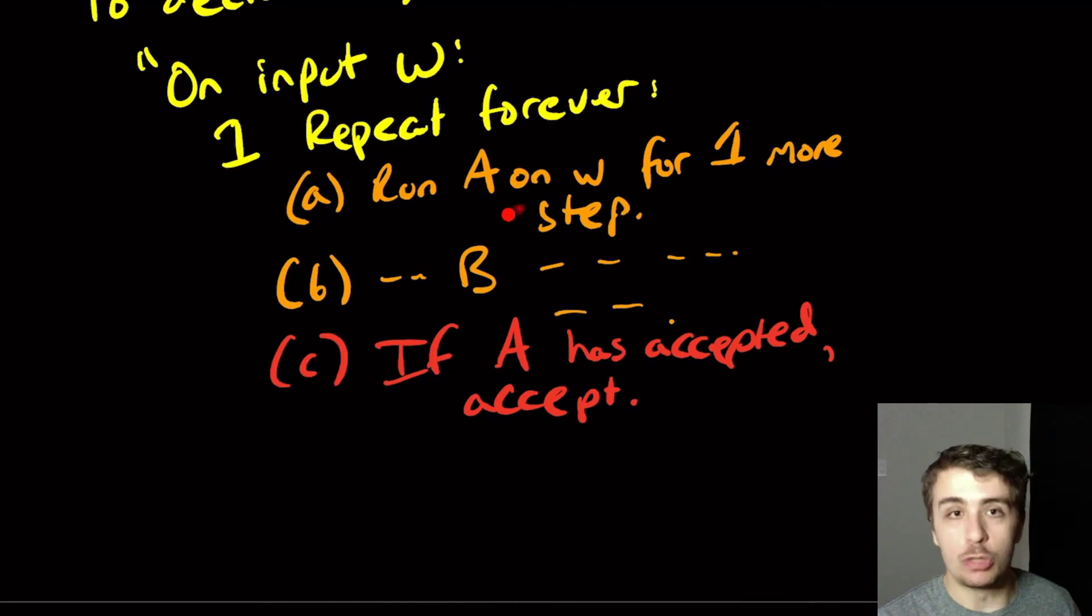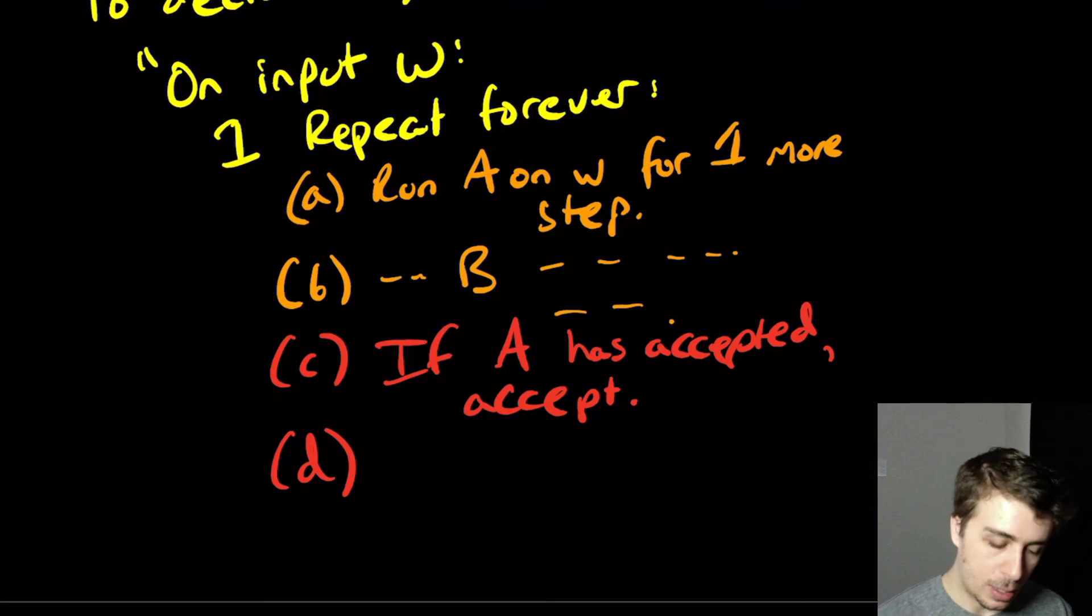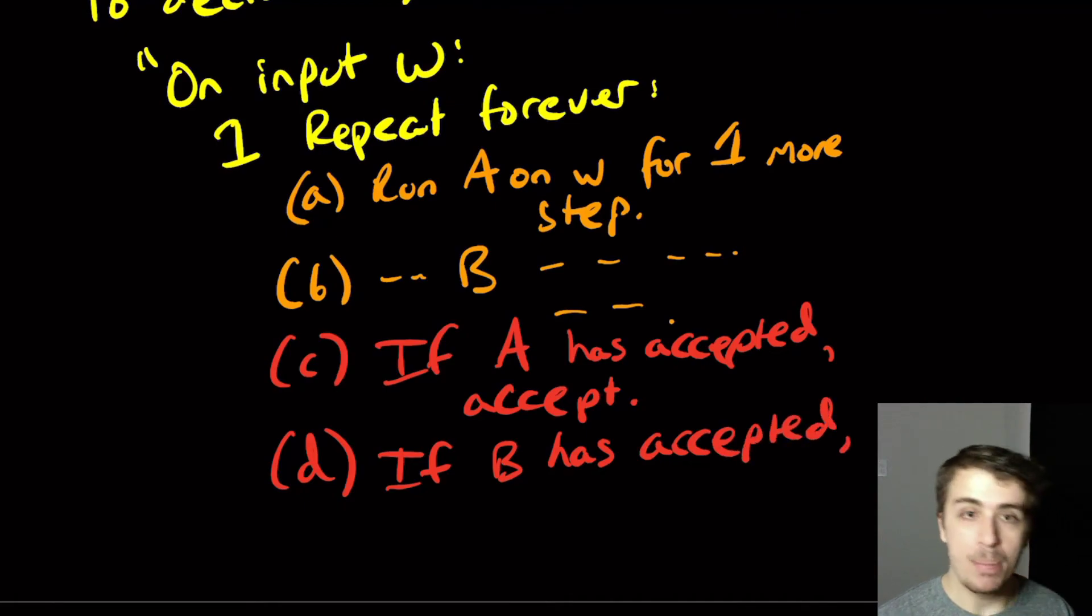And in fact, at this point, it's as if we just ran the recognizer A and nothing else. No B machine needed. But here's the crucial step, is the step D right here. So at this point, if B has accepted, then remember that B is the language L complement. So if B says this string is in the complement of L, and we're trying to decide L, therefore we need to say, no, it is not in our language. It's in the complement language. And so we need to reject.